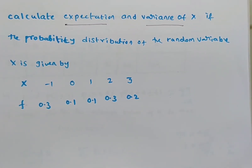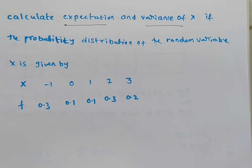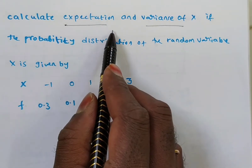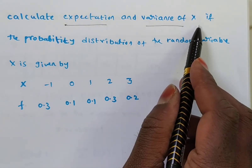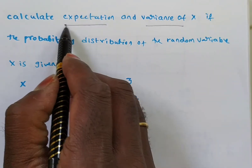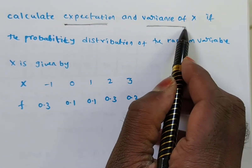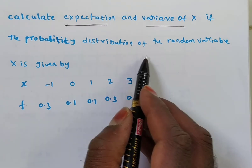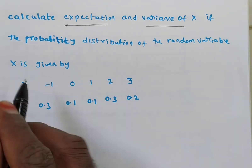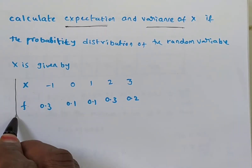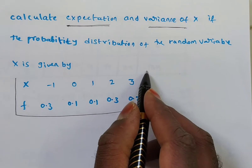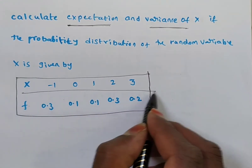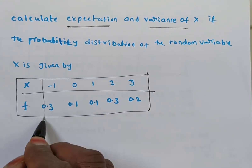Hi friends, now we are solving: calculate expectation and variance of x. If the probability distribution of a random variable x is given, this is the probability distribution. By observation of this distribution,